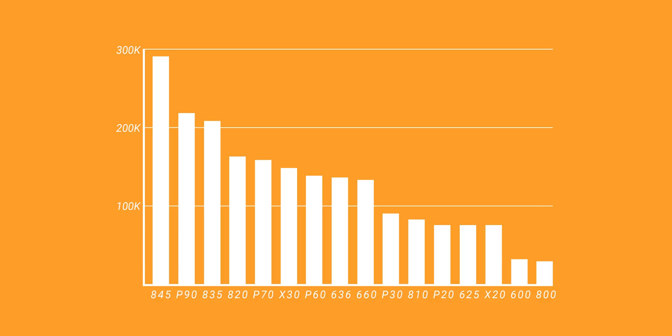A few things to take away here: one, the Snapdragon 845 is a seriously fast chip; two, the 820 is surprisingly high up there; and three, MediaTek's Helio P90 is pretty fast, even beating the 835 by a significant margin.